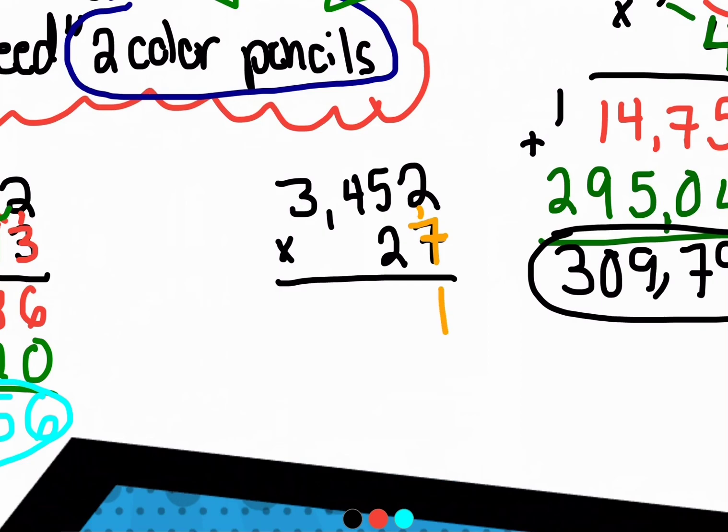Seven times two is 14, carry the one. Seven times five is 35, plus one is 36, carry the three. Seven times four is 28, 28 plus three is 31.